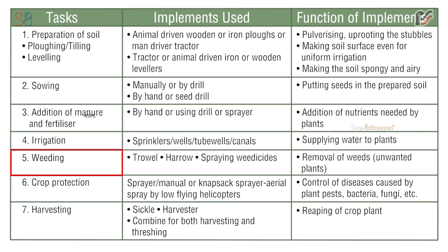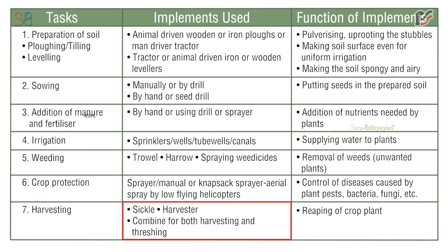Task 5 is weeding — using trowel, harrow, or spraying weedicides — for removal of weeds or unwanted plants. Task 6 is crop protection — using sprayer, manual or knapsack sprayer, or aerial spray by low-flying helicopters — for control of diseases caused by plant pests, bacteria, fungi, etc. Task 7 is harvesting — using sickle or harvester, or a combine for both harvesting and threshing — for reaping of the crop plant.